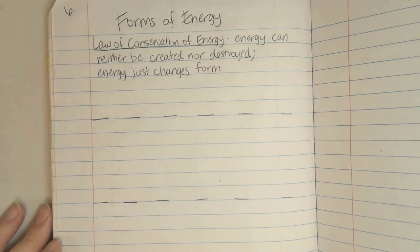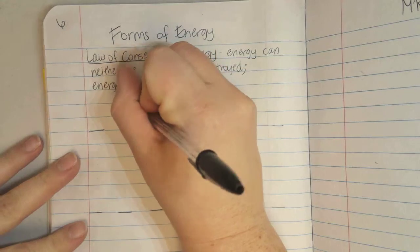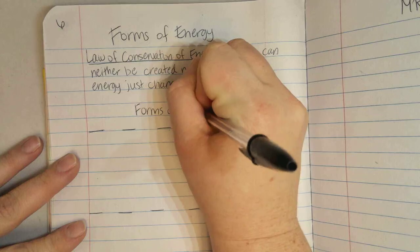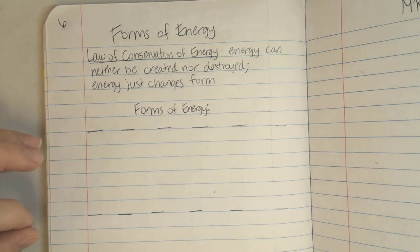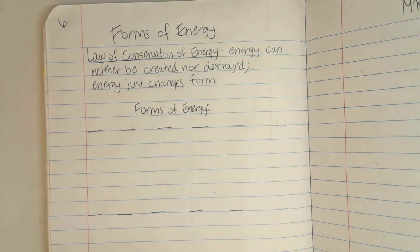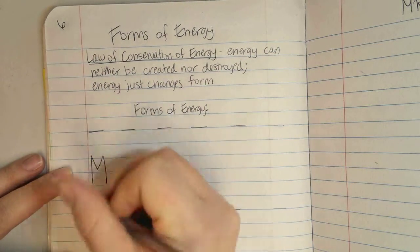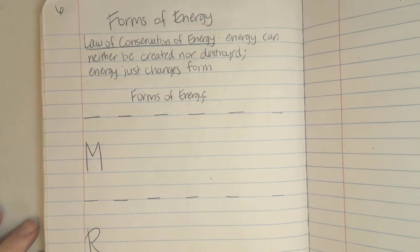The first section wasn't really a form of energy. That was just setting us up for the rest of the notes, the law of conservation of energy. These are going to be the forms of energy. We're going to use the acronym Mrs. Cent to remember these. So on this page, we're going to talk about the first three that include, the first letter is M, R, S.